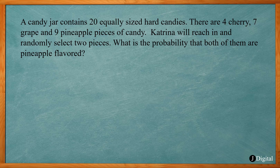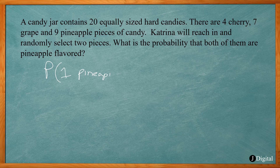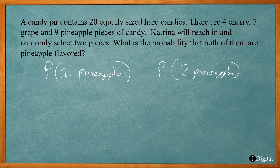The third problem: a candy jar contains 20 equally sized hard candies — four cherry, seven grape, and nine pineapple. Katrina randomly selects two pieces. What is the probability that both are pineapple flavored? We use the multiplication rule of probability: P(A and B) = P(A) × P(B). The probability of selecting pineapple on the first draw is 9 over 20.